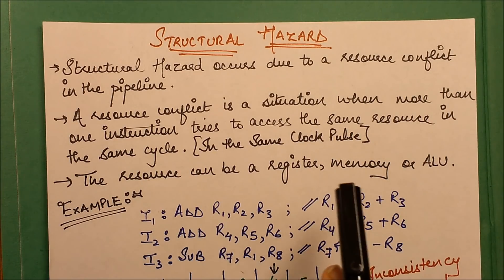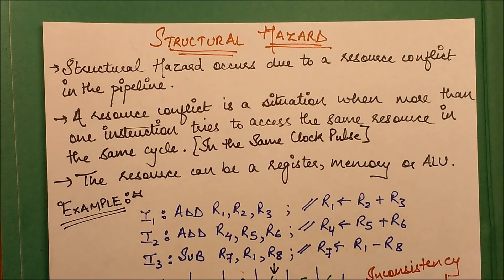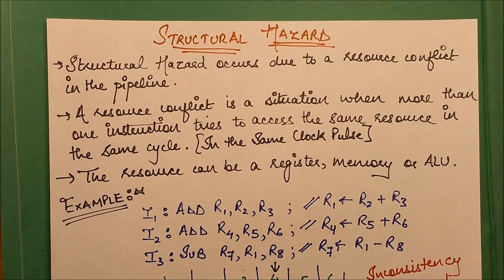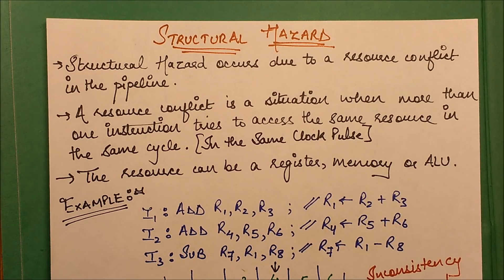A resource conflict is a situation when more than one instruction tries to access the same resource in the same cycle, in the same clock pulse. It is very clear that a resource conflict is a situation in which two or more instructions try to access the same resource, which may be a register, memory location, or ALU, in the same clock cycle.